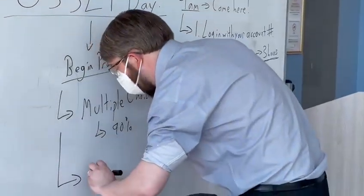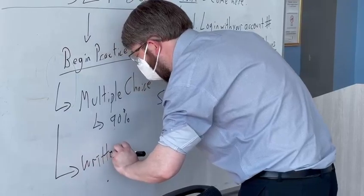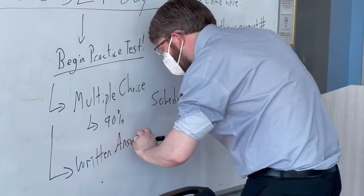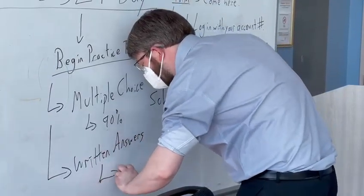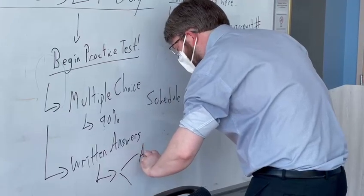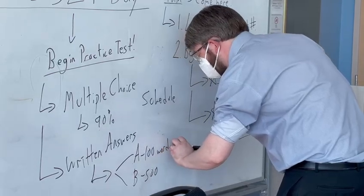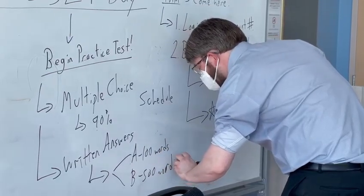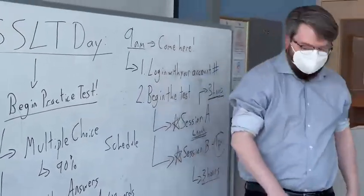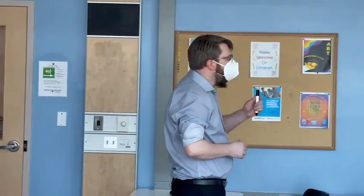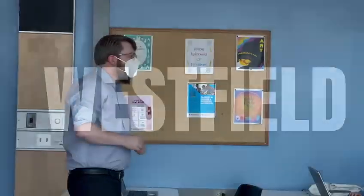You guys will be okay — just read the stories and think about context clues. Then there are written answers, of which there are two: A and B. These are the most difficult, but because they are the most important they require writing. A total of 600 words — and they don't let you write more; they will cut you off at 510 or 110, no more.